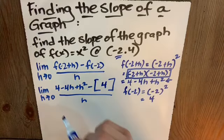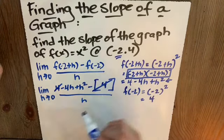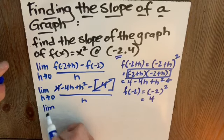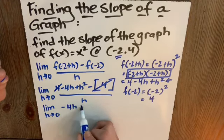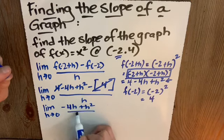Anything we can cancel? Heck yeah. And so I get the limit as h approaches 0 of negative 4h plus h squared divided by h.